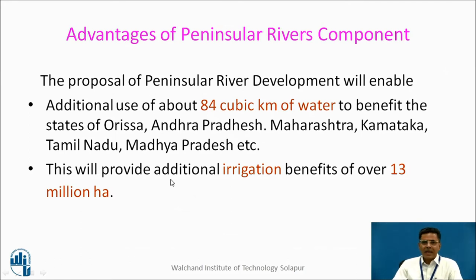Advantages of the Peninsular River Development Component: additional 84 cubic kilometers of water will be available, benefiting Orissa, Andhra Pradesh, Maharashtra, Karnataka, Tamil Nadu, and Madhya Pradesh. It will provide additional irrigation benefits for 13 million hectares.